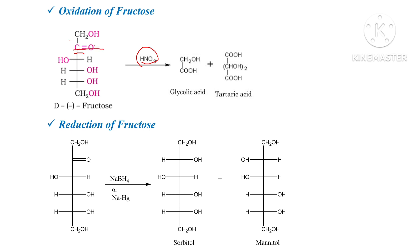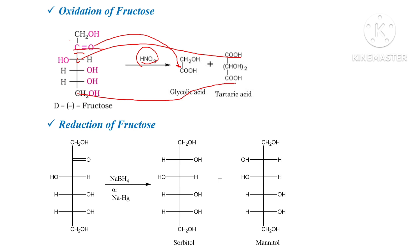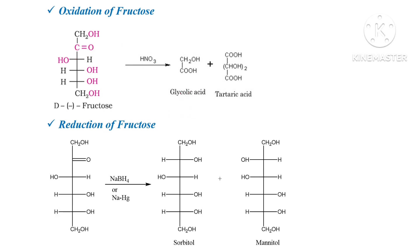With HNO3 oxidation, fructose cleaves to form CH2OH and COOH fragments. Both the primary alcohol and the ketone carbonyl are oxidized to COOH groups. The products are glycolic acid and tartaric acid upon oxidation of fructose with HNO3.